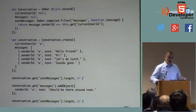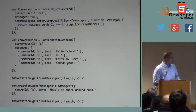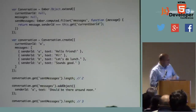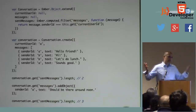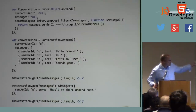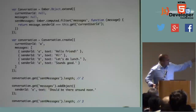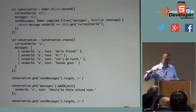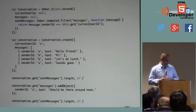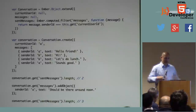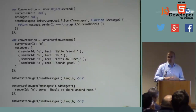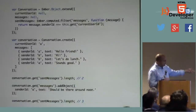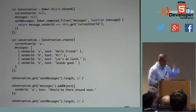This all builds on the observers API — you're observing the array, observing changes at a low level. For example: var conversation is conversation.create, current user ID is 'a', with a bunch of messages, two of which have sender ID 'a'. Our filter checks if sender ID matches current user ID. So conversation.get sent messages.length is two. Then we add a new object with sender ID 'a', and now sent messages has three.